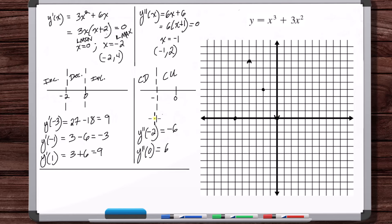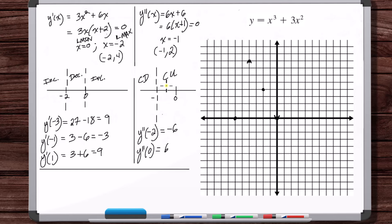What about inflection points? An inflection point can't occur at a discontinuity, but this function is continuous. We check: does the second derivative switch signs across x = −1? It does — from negative to positive. So (−1, 2) is an inflection point.